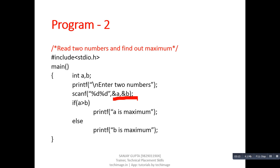If a is not greater than b, then 'b is maximum' will be printed. Suppose the value of a is 1 and the value of b is 10.